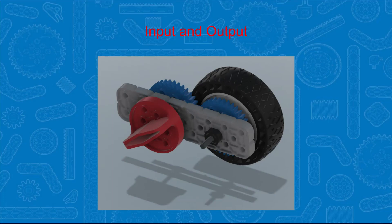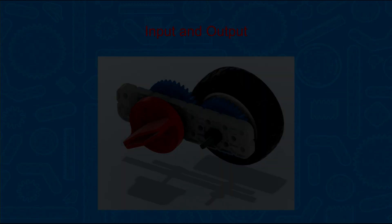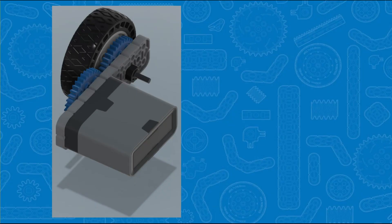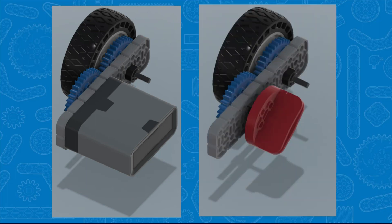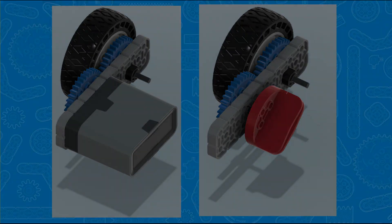A very important concept to understand for gear systems is input and output. Input is where the energy comes to turn the gear. For most robots, this would be an electric motor. The output is where the energy is transferred to, such as a wheel. For the purpose of this video, we are going to keep things simple and use a knob to provide the input energy for the gear system.